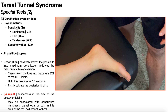Sensitivity depends on which symptom you're monitoring: numbness has a sensitivity of 25%, pain has a sensitivity of 57%, but the best one — tenderness specifically in the area of the posterior tibial nerve — has a sensitivity of 98%. So as a standalone test, the dorsiflexion eversion test has strong clinical value.